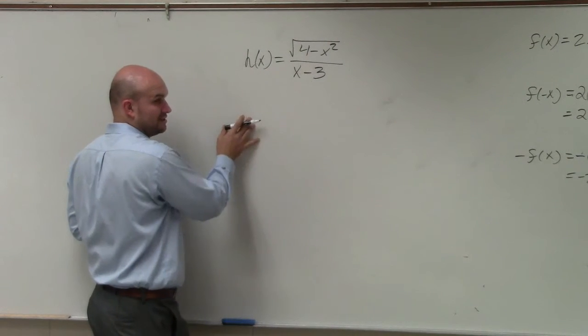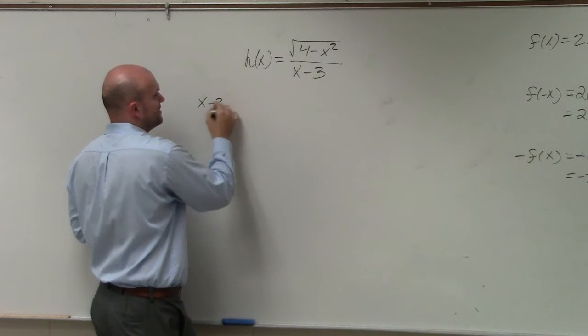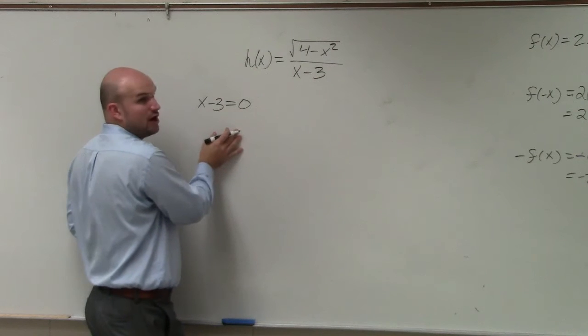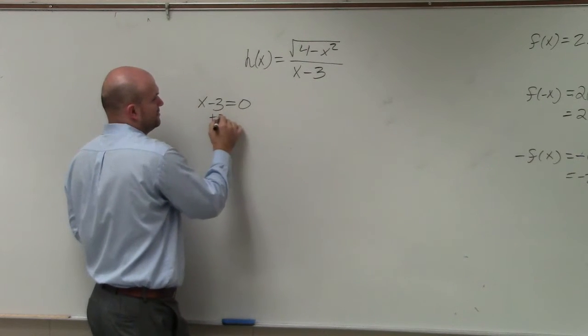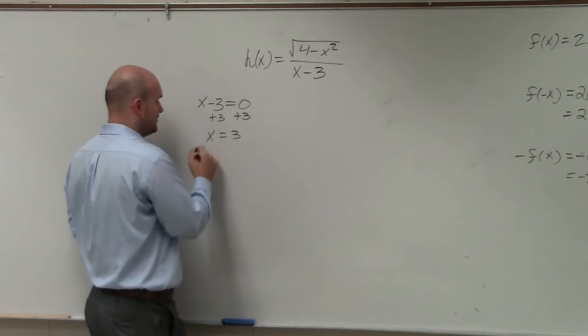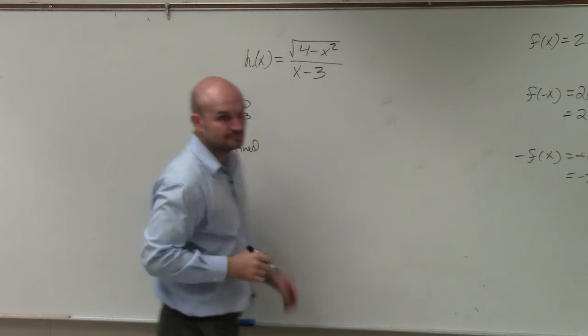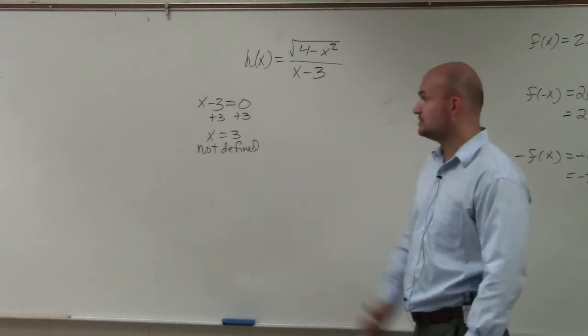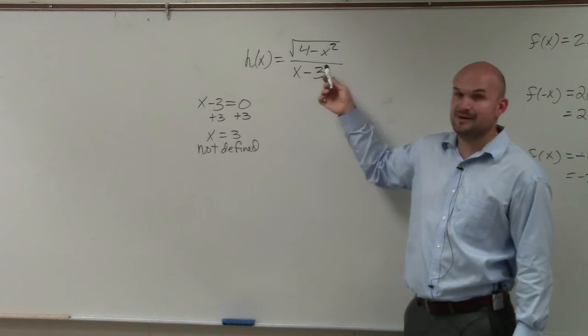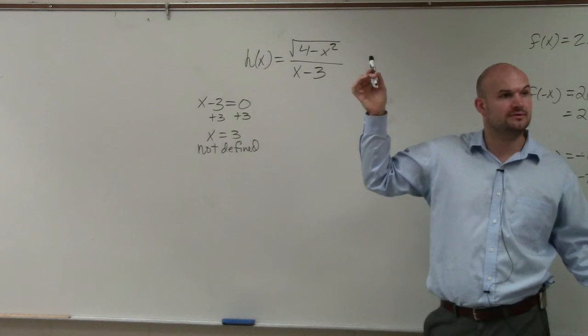So our first restriction, we need to figure out what numbers make our denominator equal to 0. So whatever numbers make our denominator equal to 0 are not defined. So I add 3 to both sides, x equals 3. When x is equal to 3, my function is not defined, right? And then we can just verify that. Plug 3 into this function. 3 minus 3 is 0. You can't divide by 0. So the function is not defined at 3. Make sense?